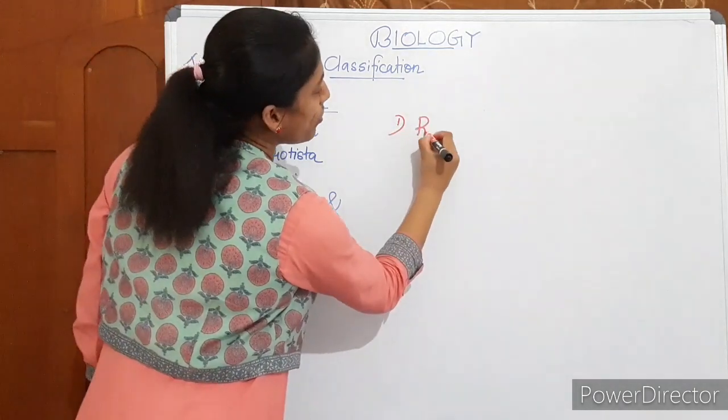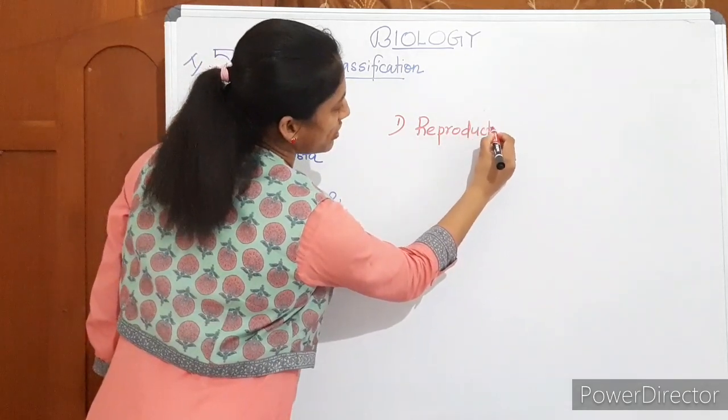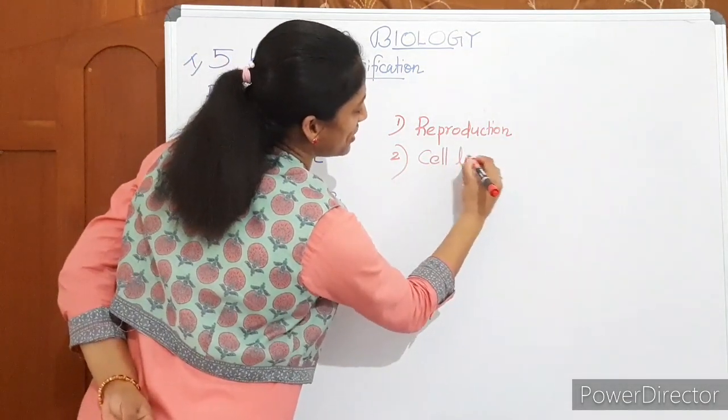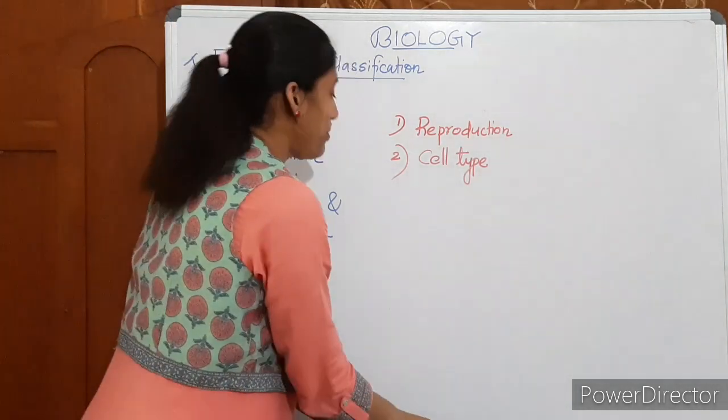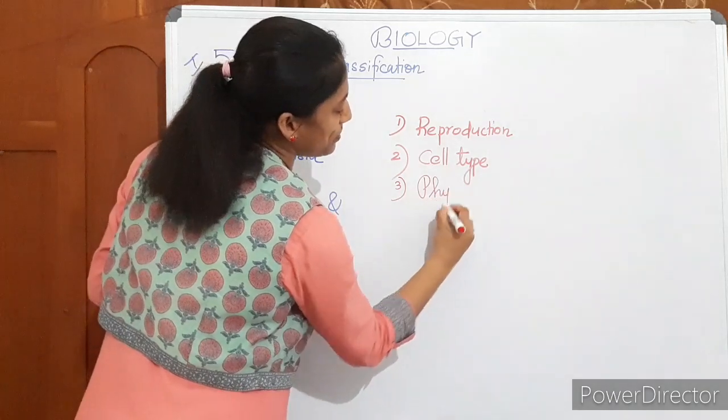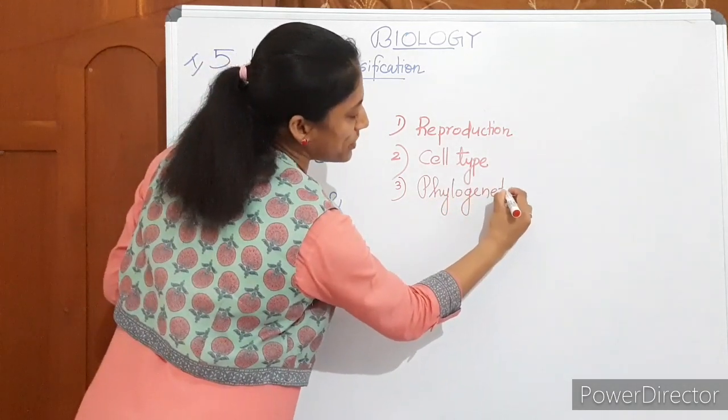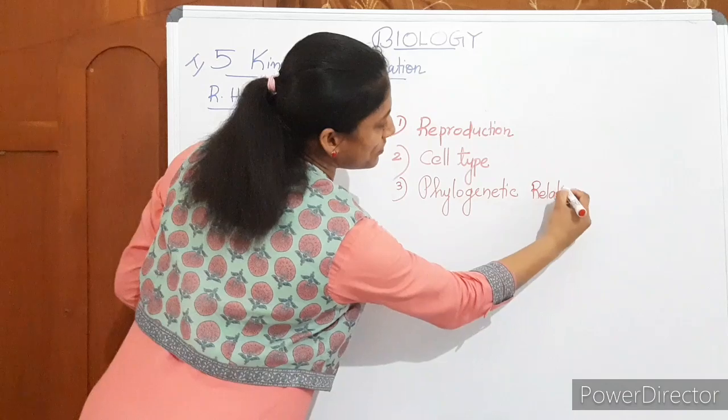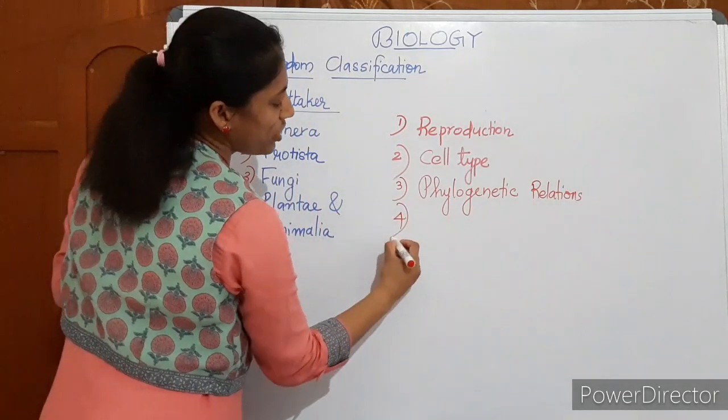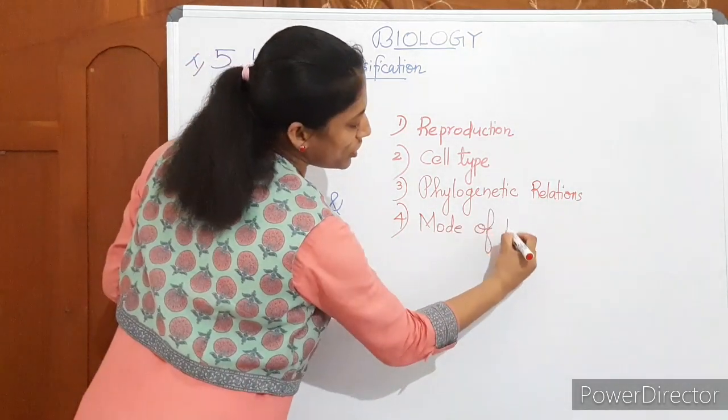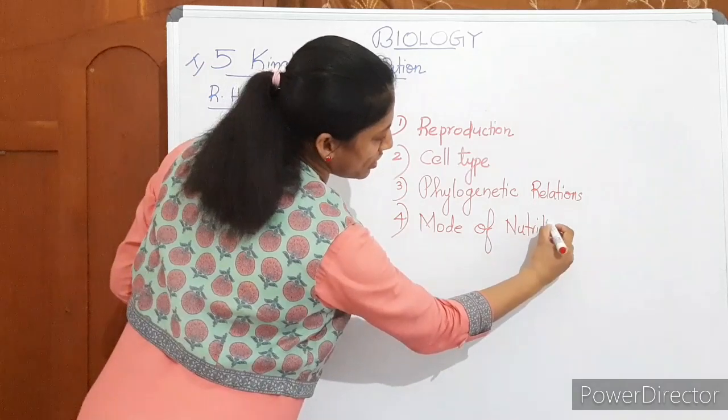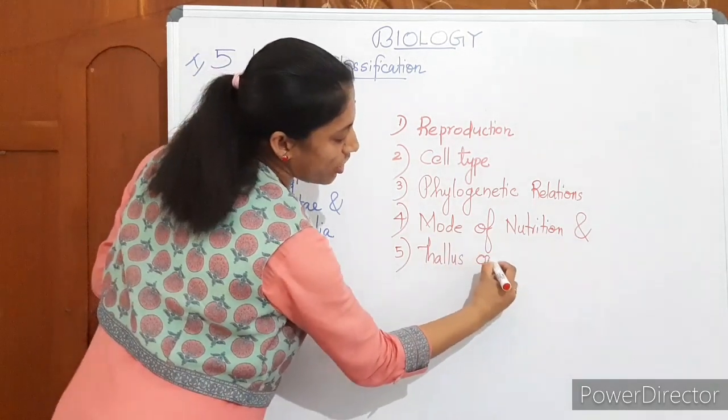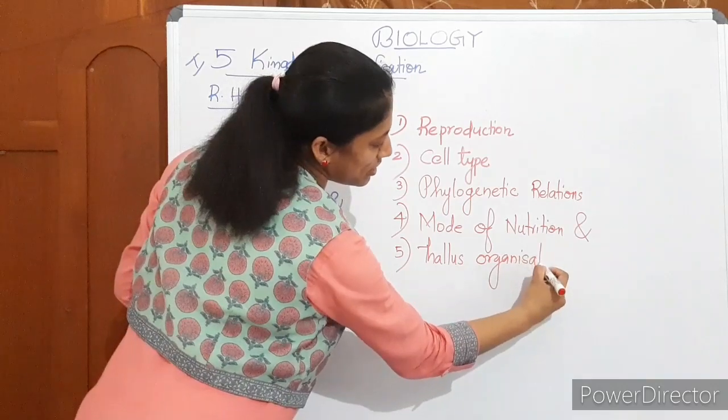He classified organisms into five kingdoms based on these main features. Number one: mode of reproduction. Number two: cell type. Number three: phylogenetic relationship, means evolutionary relationship. Number four: mode of nutrition. And number five: thallus organization.